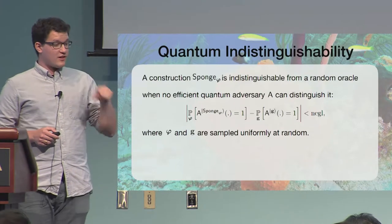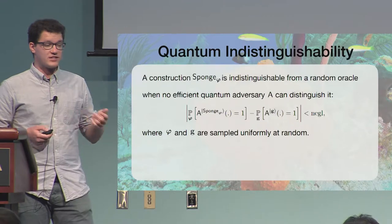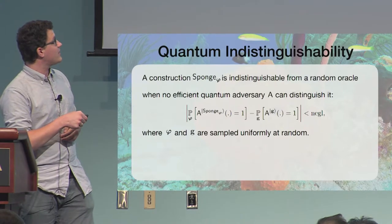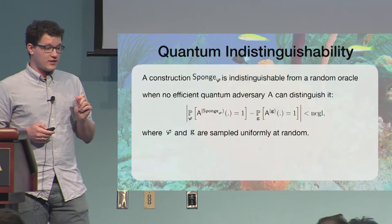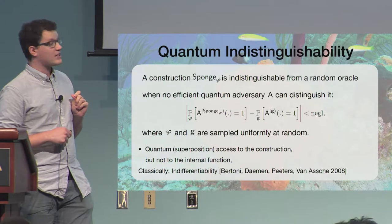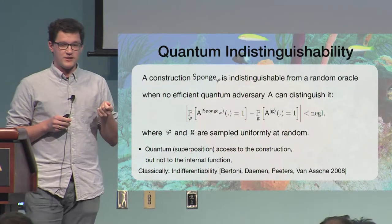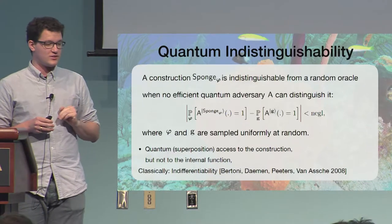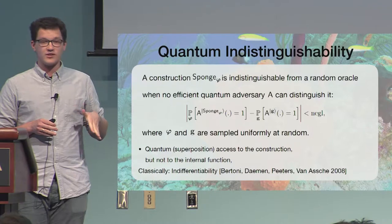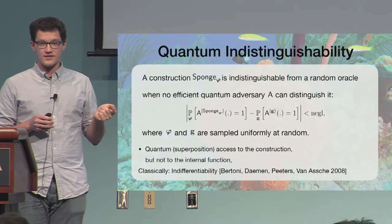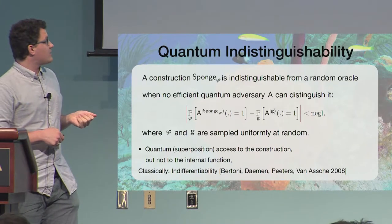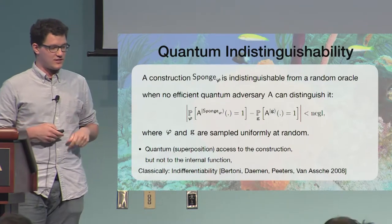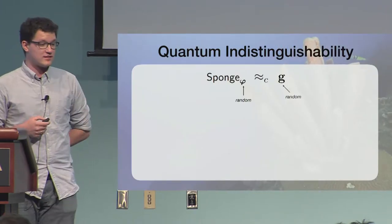So quantum indistinguishability of the construction sponge is when no adversary can distinguish the construction from a random oracle, and those phi here and G are uniform and random. Now, it's important to know that we give the adversary access only to the whole construction and not the internal function. Because this would bring, this would put us in the realm of indifferentiability that we discussed before. But this is not what we do. We can use only this notion to prove the statement that sponge is a PRF. So, classically, for example, the Andreeva and others paper, they use the indifferentiability bound. But it's not necessary.